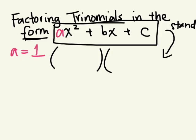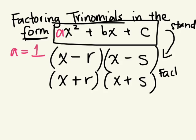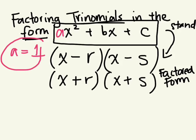What does factored form look like? It can be X minus R and X minus S, or X plus R and X plus S — the factors can be positive or negative. You'll learn another type when A is not 1, but for today we're just going to look at when A equals 1.